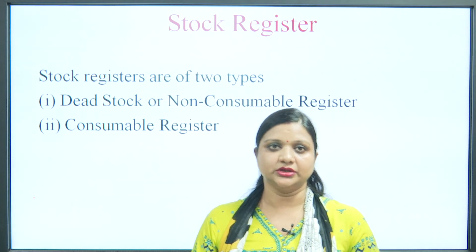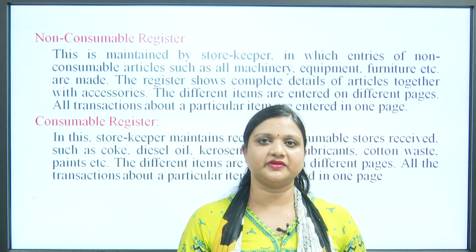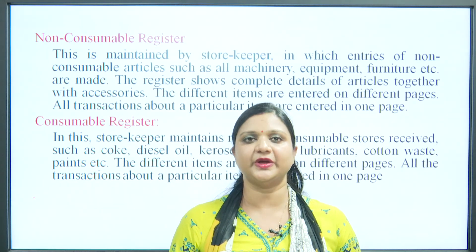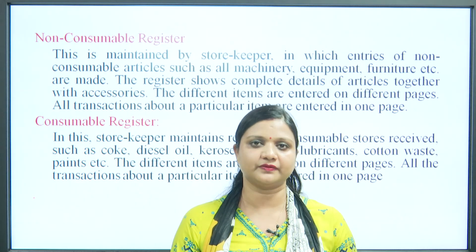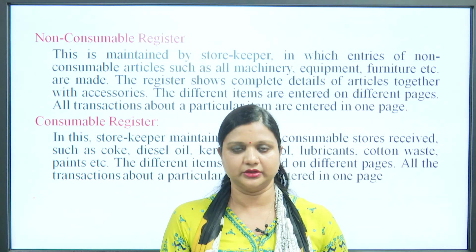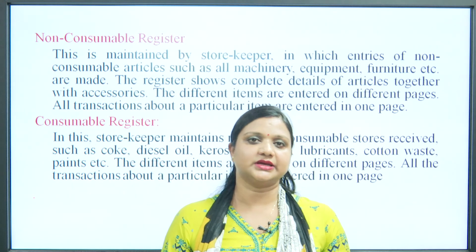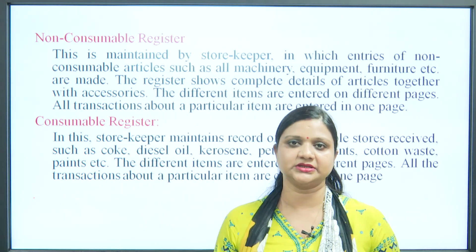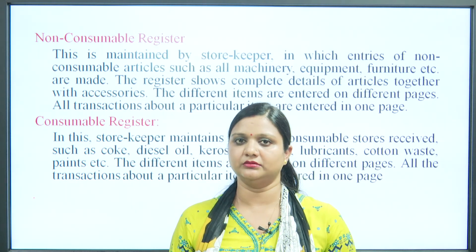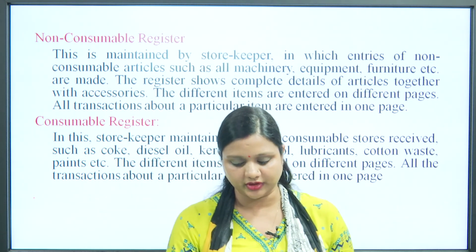The second one is the stock register. Stock registers are of two types: non-consumable and consumable. Non-consumable registers contain information about non-consumable articles like machinery, equipment, furniture — the fixed assets of the particular outlet. Consumable registers record information about consumables like diesel, oil, petrol, lubricants, cotton, and paints. These different items are entered on different pages — the store has different consumables and every consumable has one particular page where all transactions about that item are entered.